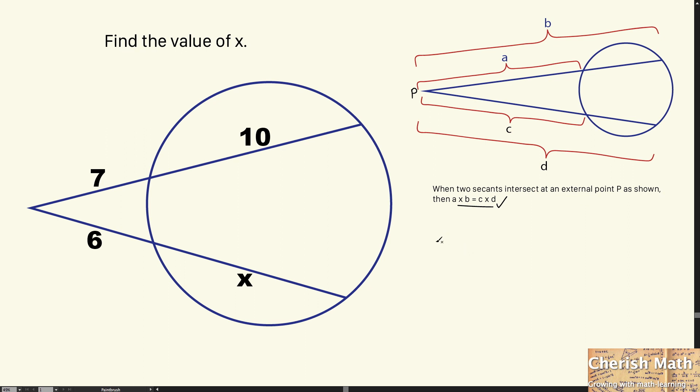Here it comes for the working. 7 multiplied by the entire length here is 10 plus 7.